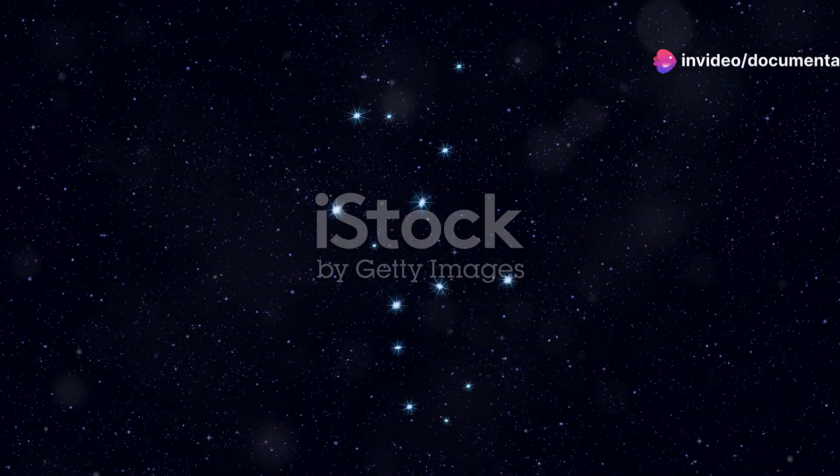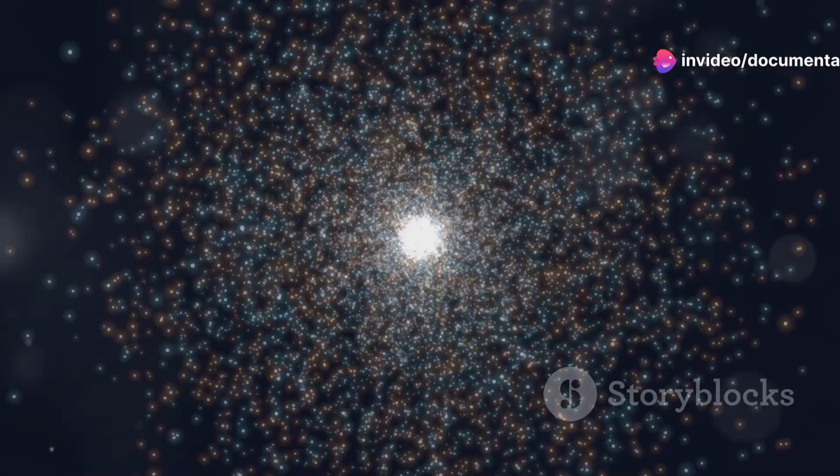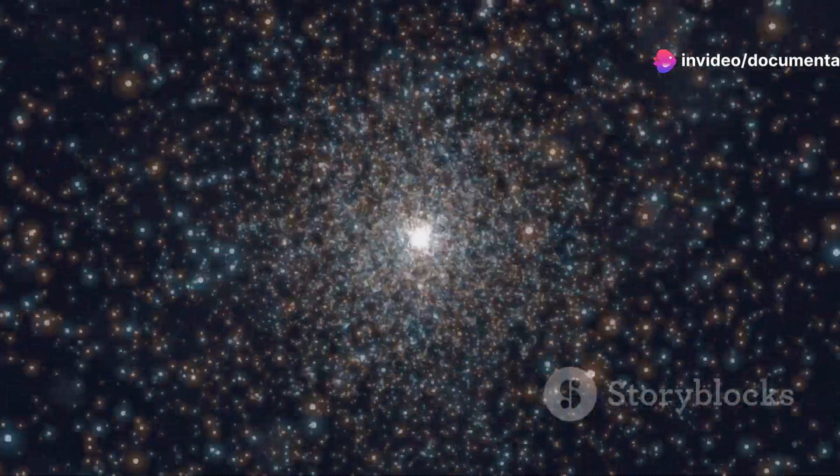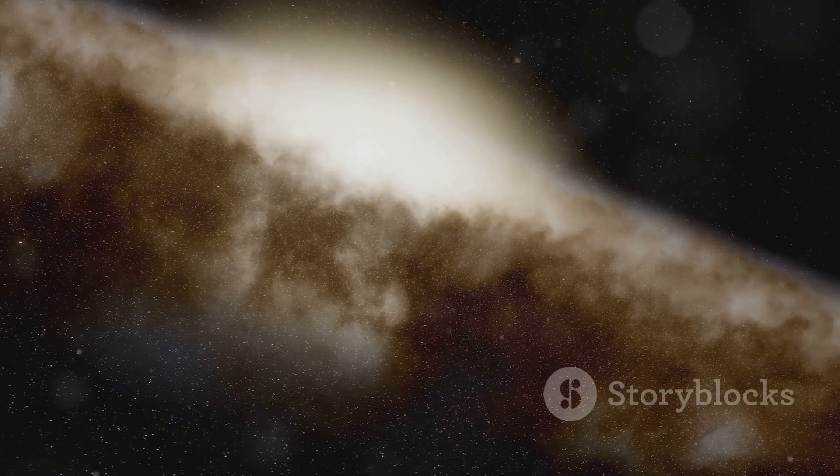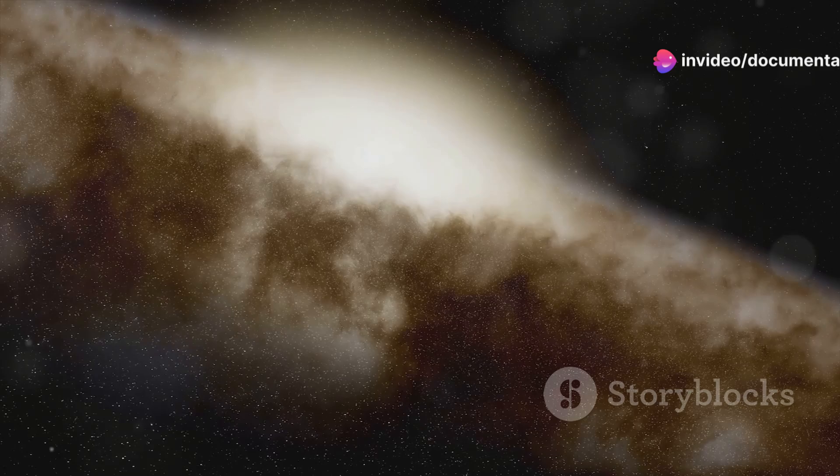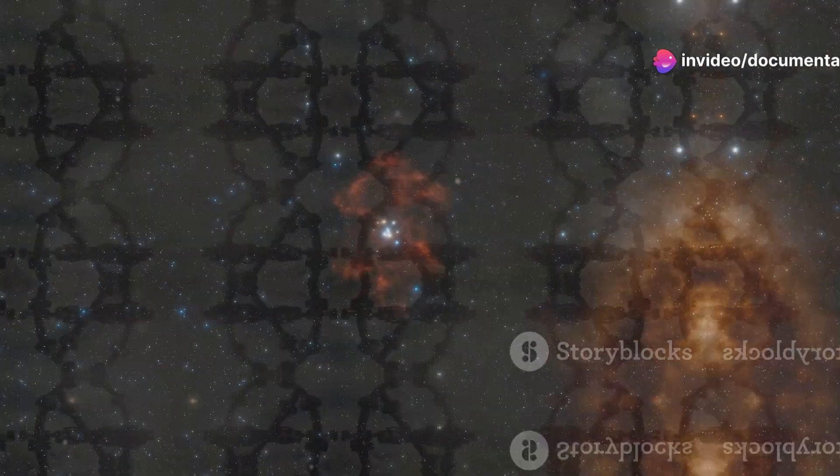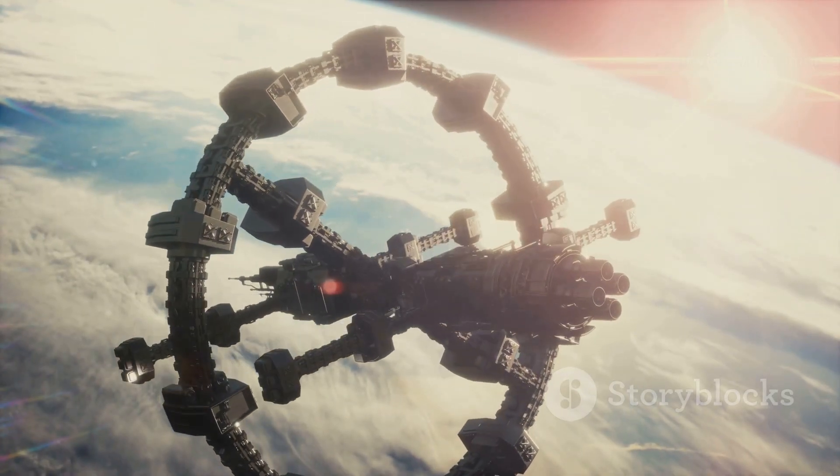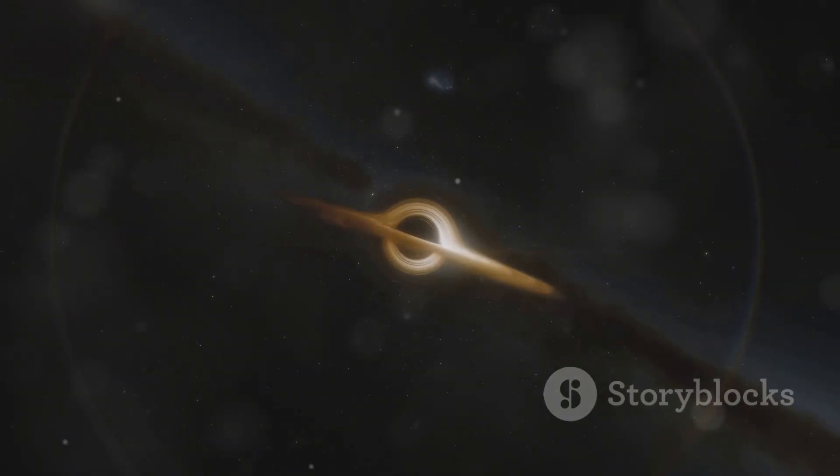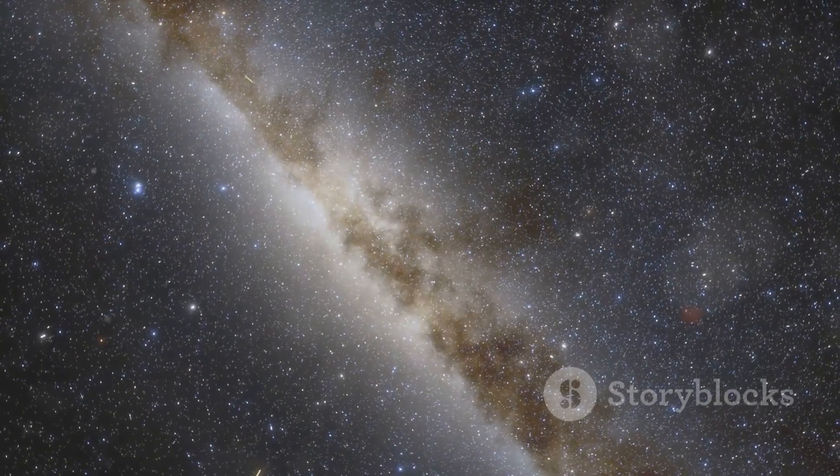Deep within the constellation of Virgo, nestled amongst a cluster of ancient stars, Hubble detected it - an anomaly. A structure so vast, so complex, and so utterly alien that it defies explanation. This is no random scattering of cosmic dust. This is something else. The scientific community is abuzz, theories flying faster than light itself. Could this be evidence of advanced extraterrestrial life? A tear in the fabric of space-time? Or something even more profound?